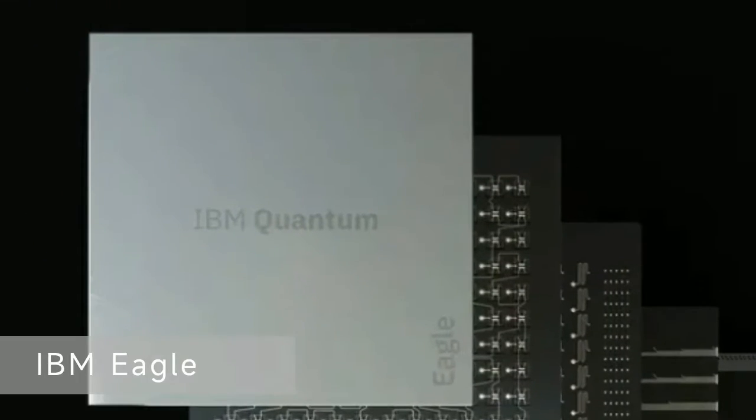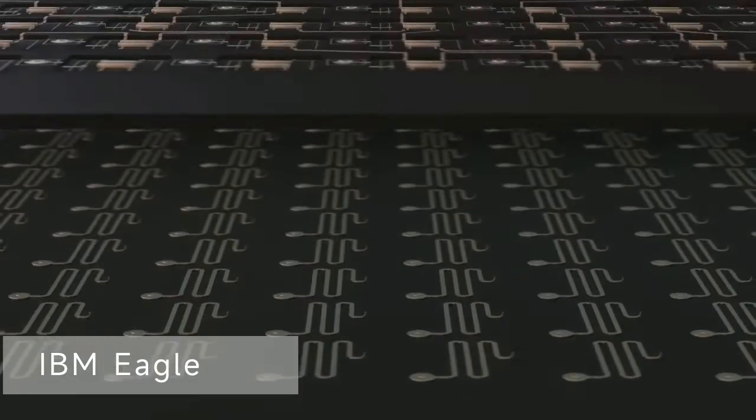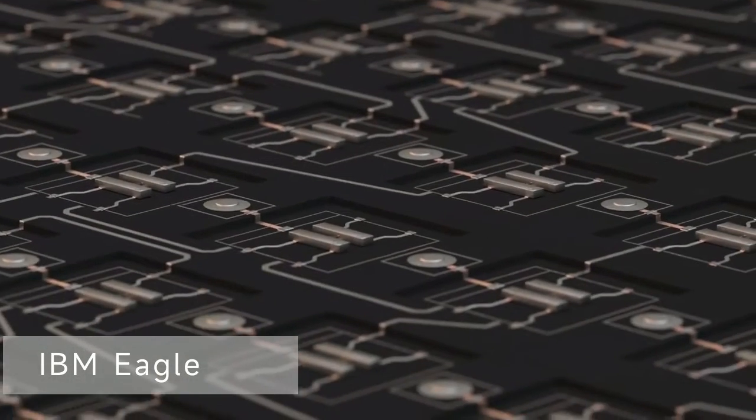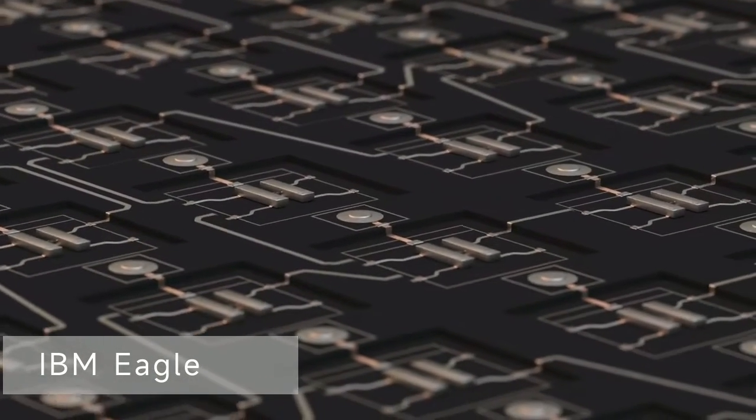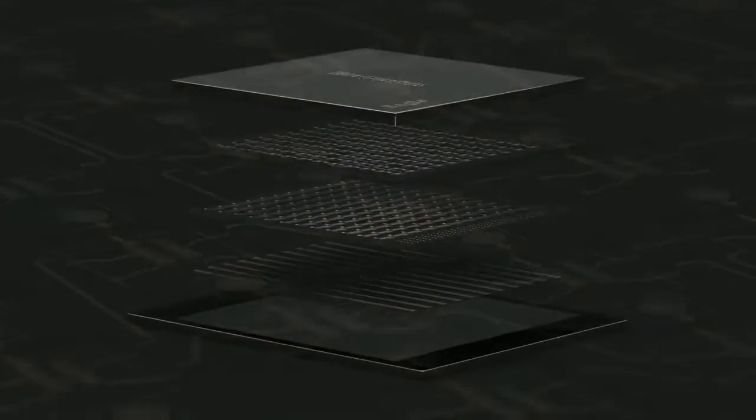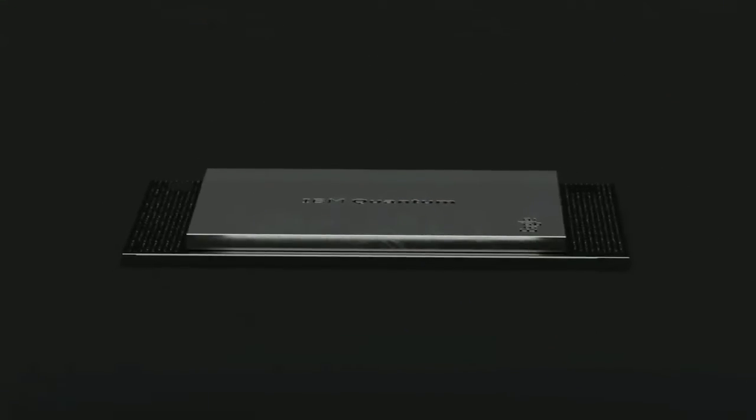One month later, in 2021 November, IBM has taken a major leap forward with the release of a 127 qubit superconducting processor Eagle, which breaks the 100 qubit processor barrier for superconducting quantum computer. What a crowded race.